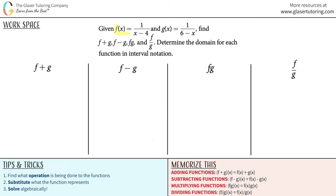Given f of x equals 1 over x minus 4 and g of x equals 1 over 6 minus x, we have to find f plus g, f minus g, f times g, and f divided by g, and then determine the domain for each of the functions in interval notation.